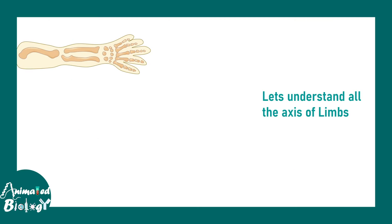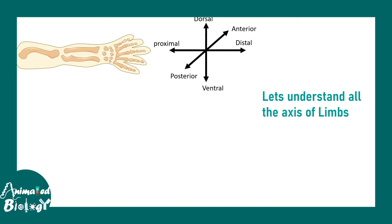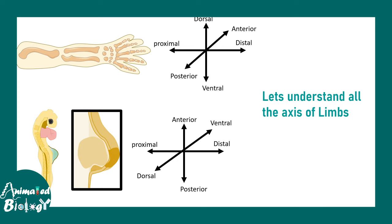Limb development is happening along different developmental axes, so we should start by understanding the axes to get a better sense of the development. There is a proximal-to-distal axis — proximal means close to the body, distal means away from the body. There is the dorsal-to-ventral axis and the posterior-to-anterior axis. Dorsal means at the back and ventral means the belly side. Just as a developed hand or leg has its own axes, the limb bud also has its own anatomical and developmental axes.